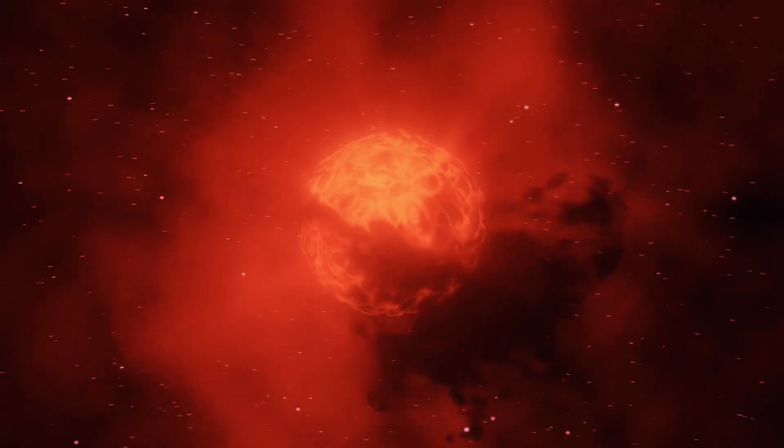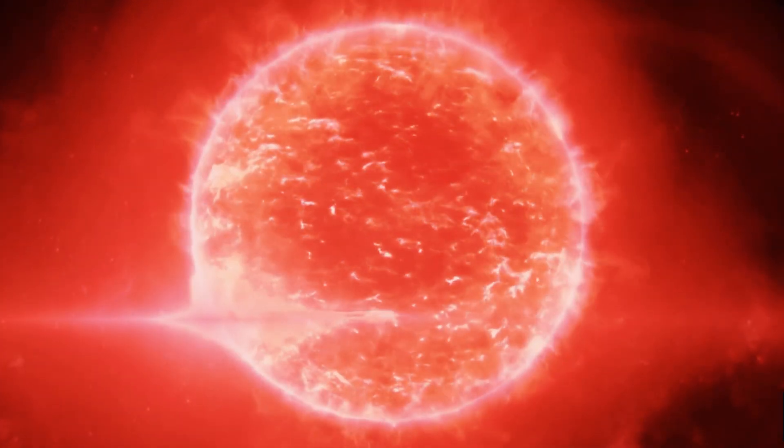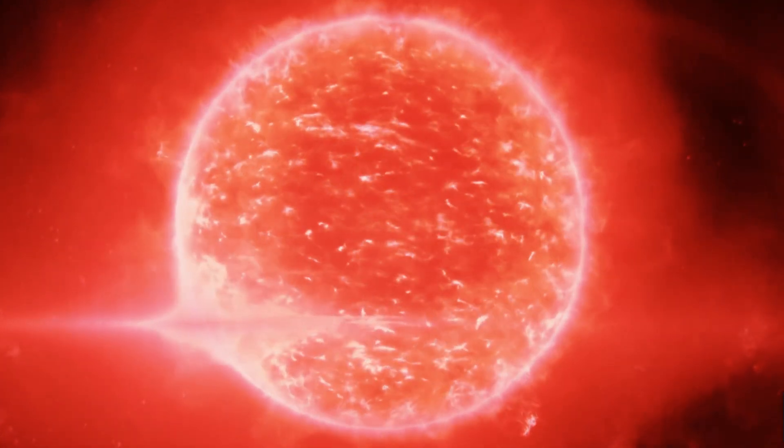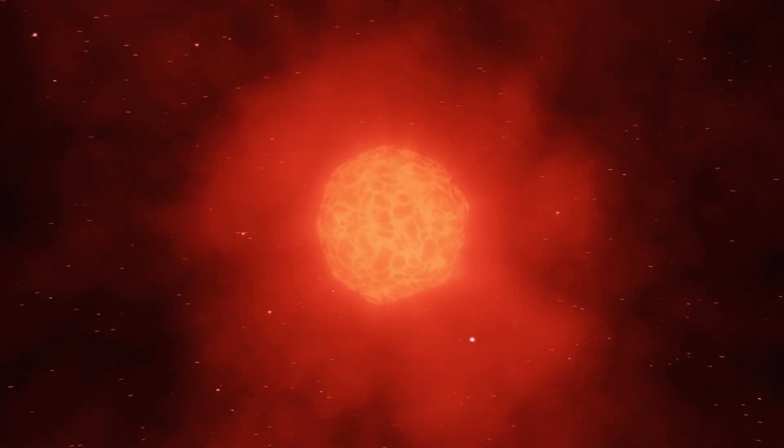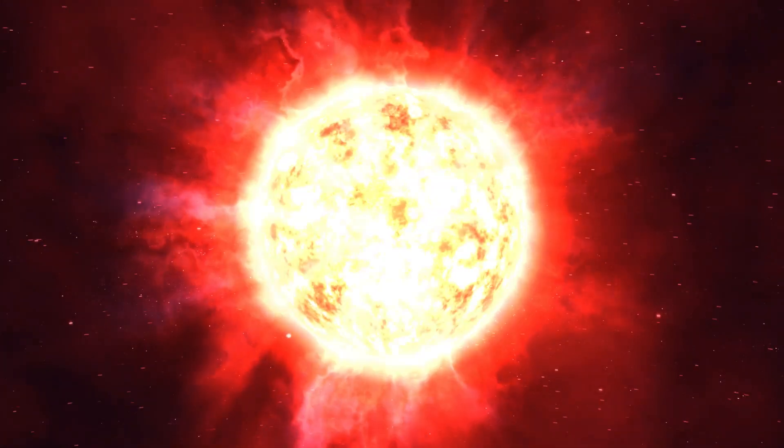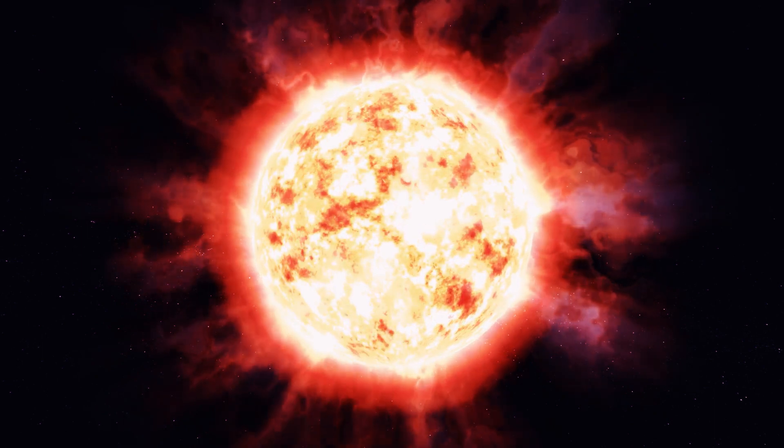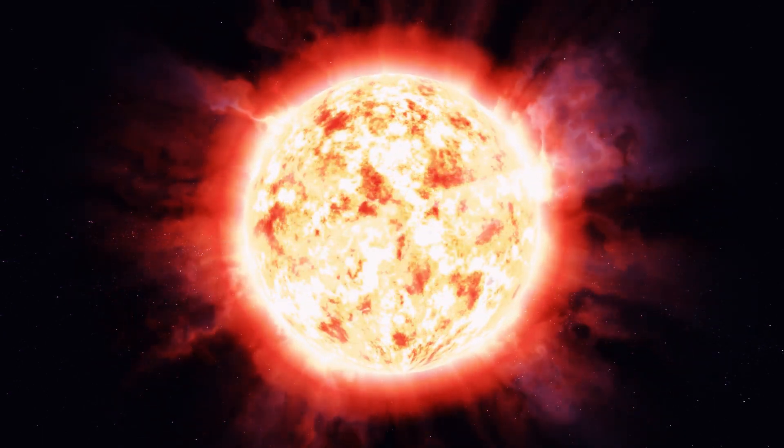But now Hubble sees red supergiant star Betelgeuse is slowly recovering after blowing its top. The photosphere is rebuilding itself and the interior is reverberating like a bell that has been hit with a sledgehammer, disrupting the star's normal cycle.